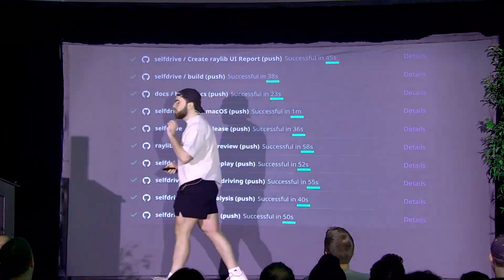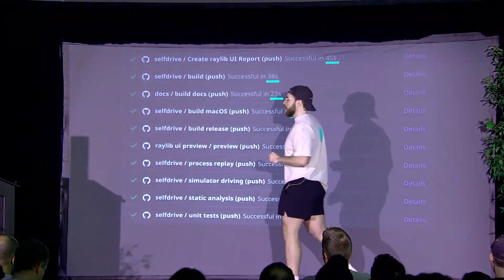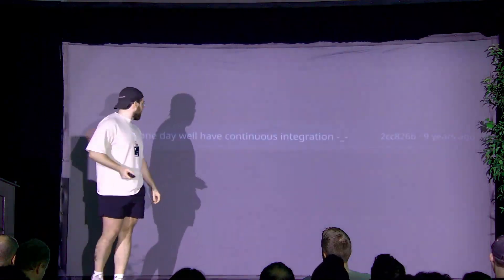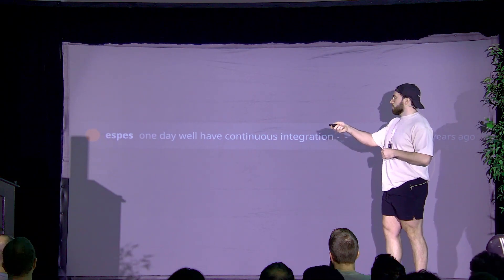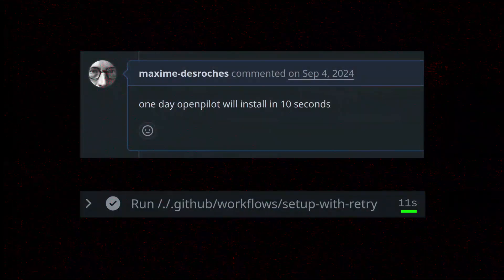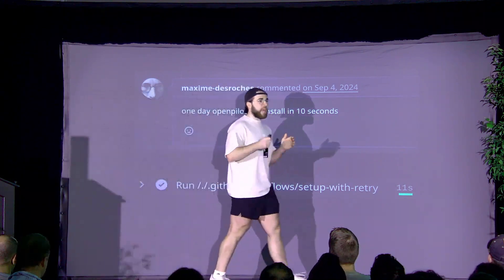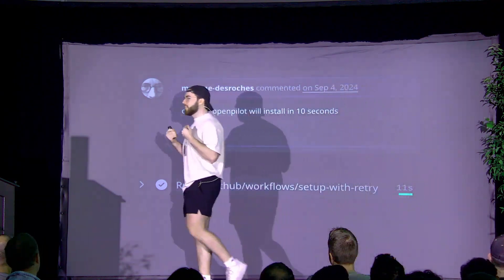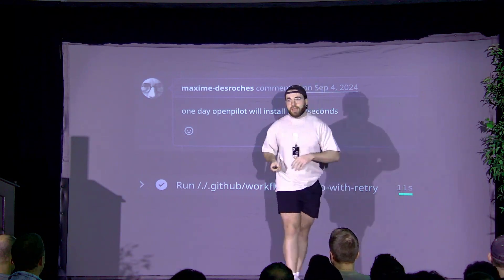The second thing you should do is dream a little bit. As Harold said, this is Comma's 10th anniversary. About nine years ago, there's a very famous commit made to OpenPilot that says, 'One day we will have CI. One day we will have testing.' And these days we have very good testing. In the spirit of that commit, about a year ago I replied to an issue on GitHub that says, 'One day OpenPilot will install in 10 seconds.' What I mean is that before you start testing your code, you have to install Python, all your packages, maybe Valgrind — and that's a recurring cost you want to shrink. These days you can install OpenPilot in around 11 seconds. It used to take minutes, and now it's very fast.